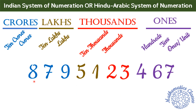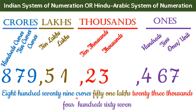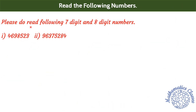Let us read this 10-digit number whose digits are 8, 7, 9, 5, 1, 2, 3, 4, 6, 7. Starting from the left, पहले three digits के बाद comma, and then at every two digits we place the comma. We read this number as 8,79,51,23,467. If you find it difficult, then do not worry — we need to read only up to nine-digit numbers. Please do read the following seven-digit and eight-digit numbers and try placing the commas correctly.